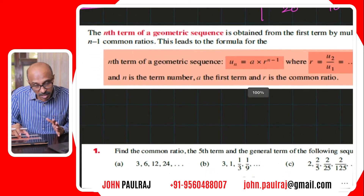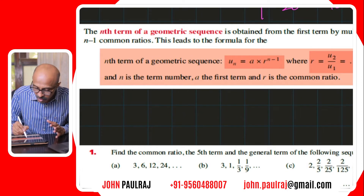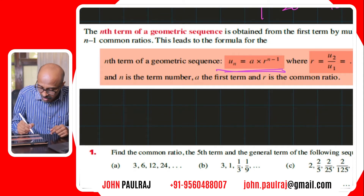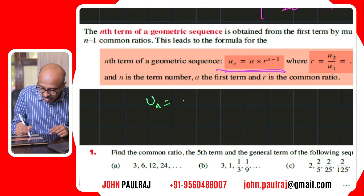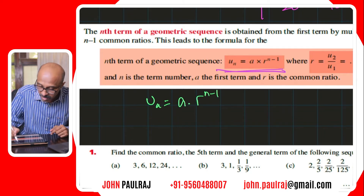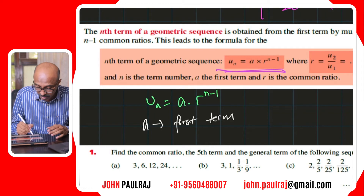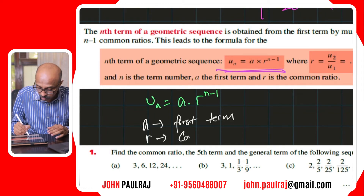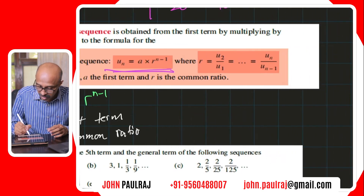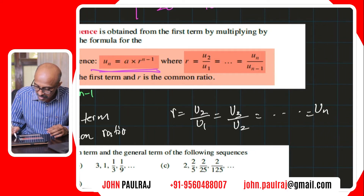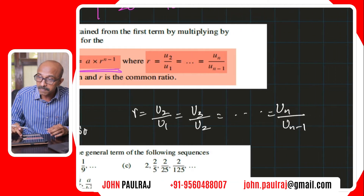The formula for the nth term, or general term, for any geometric sequence is: u_n equals a times r to the power of n minus 1. Here a is the first term and r is the common ratio — the ratio between successive terms. So you can write r as u2 over u1, or u3 over u2, and so on, which equals u_n over u_(n−1) in general.